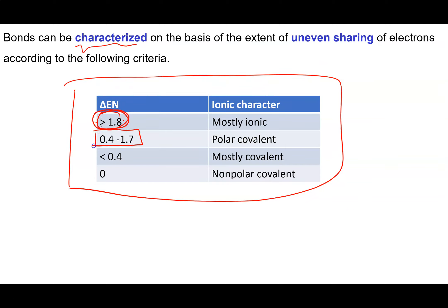Between 0.4 and 1.7 we have what we call our polar covalent bonds. We've still got sharing of electrons but it's uneven sharing of electrons. And my rule of thumb here is it has to be greater than 0.4 before we start seeing significant impact of this uneven sharing of electrons.